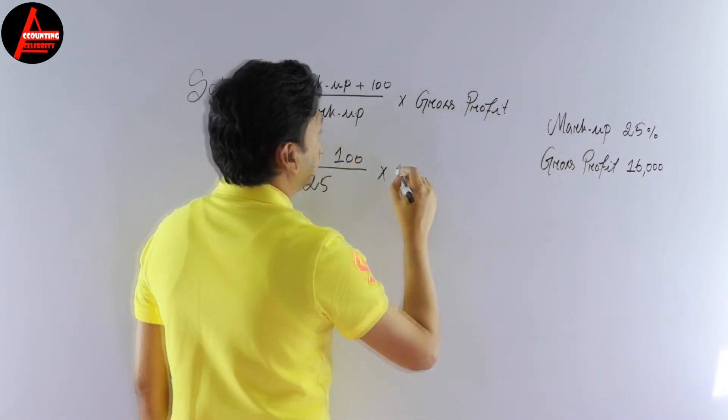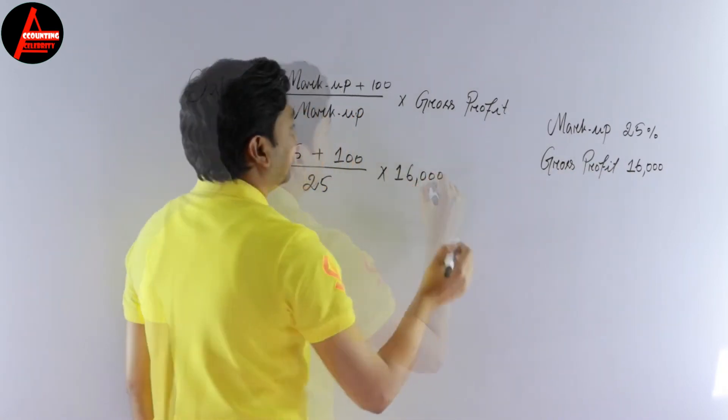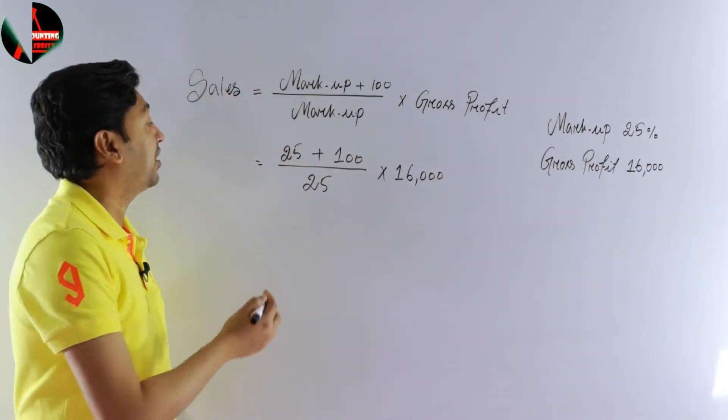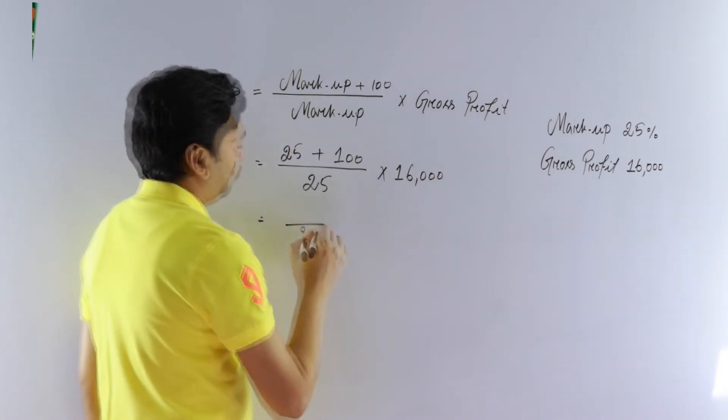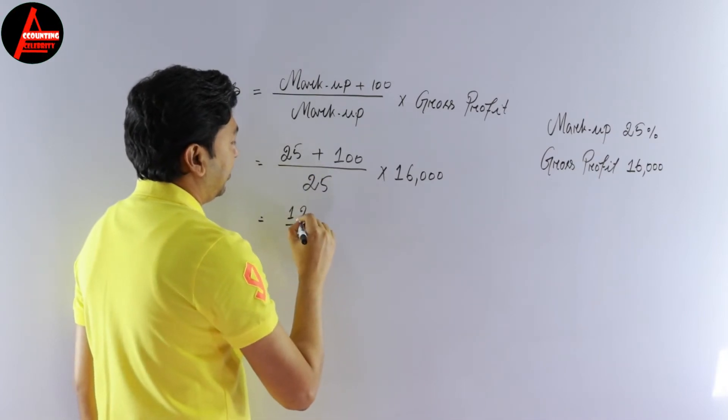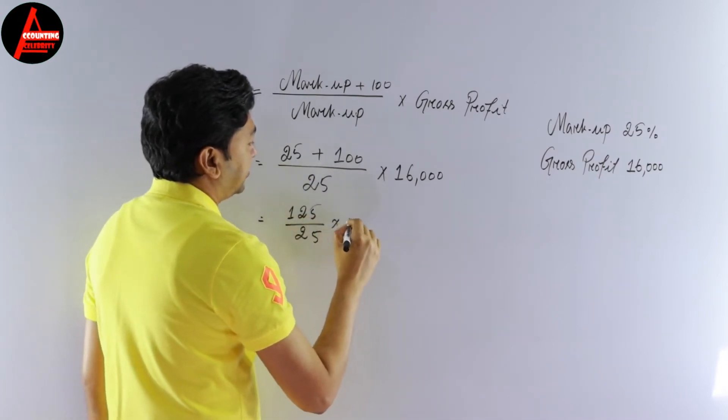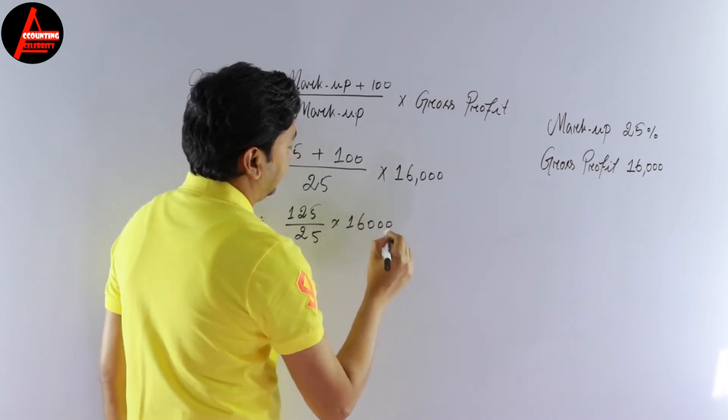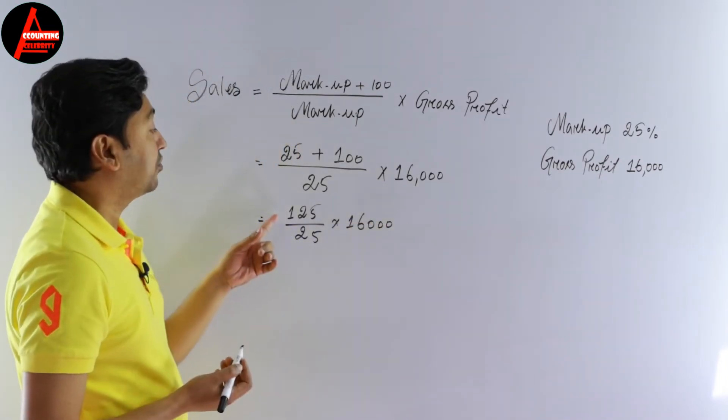Then here we have gross profit. In the question it is $16,000. Now we have to simplify. So let us write here 25, and if we add this it is 125 times $16,000. Now we have to divide 125 by 25.